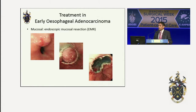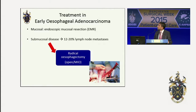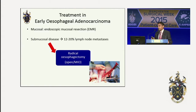We can now safely treat early cancers with endoscopic resection and endoscopic surveillance follow-up. This only applies to mucosal disease. Submucosal disease carries a 12 to 20% risk of lymph node metastases, and for this reason, we recommend radical surgery in these patients.